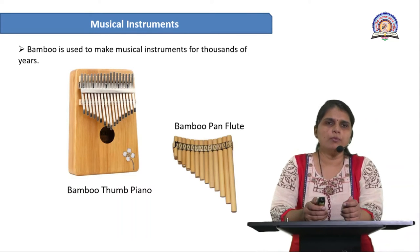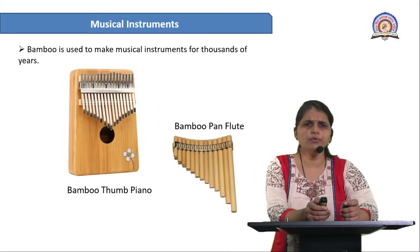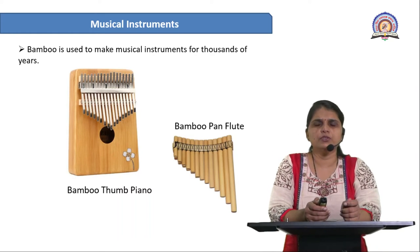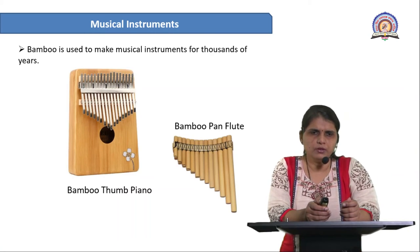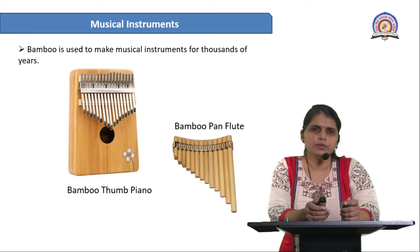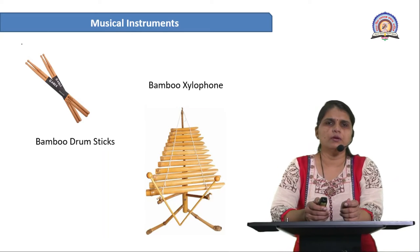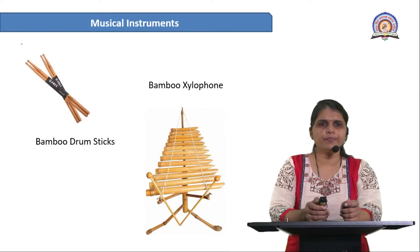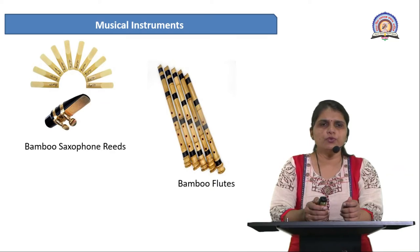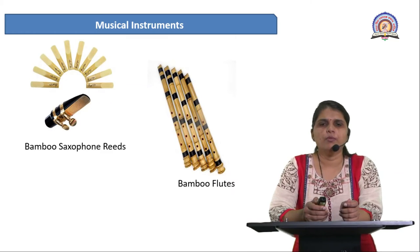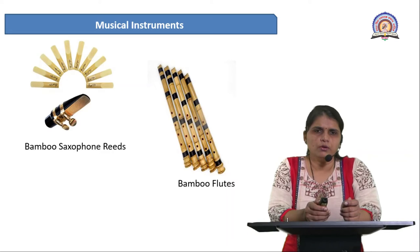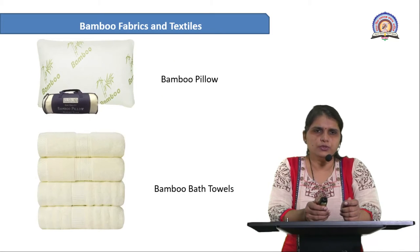The first product is bamboo musical instruments. Bamboo has been used to make musical instruments for thousands of years. These include the bamboo thumb piano, bamboo pan flute, bamboo drums, bamboo xylophone, and bamboo saxophone.